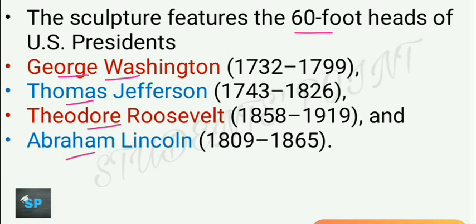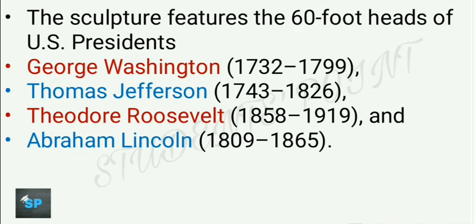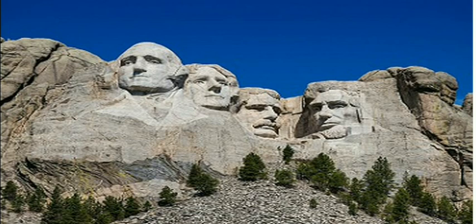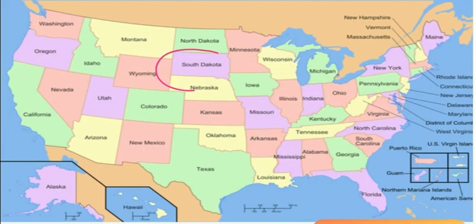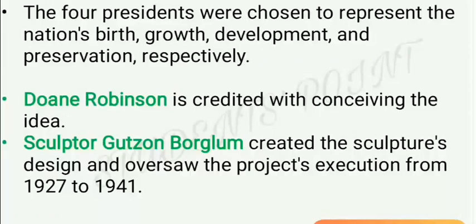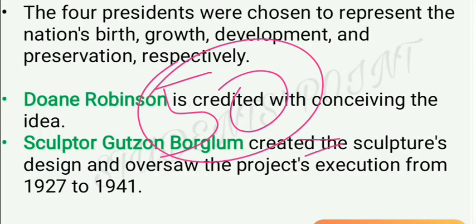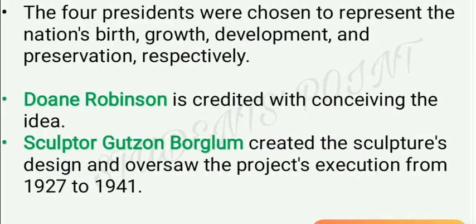George Washington lived during 1732–1799, Thomas Jefferson lived during 1743–1826, Roosevelt lived during 1858–1919, and Abraham Lincoln lived during 1809–1865. South Dakota is one of the total 50 states in the US. The four presidents were chosen to represent the nation's birth, growth, development, and preservation respectively.